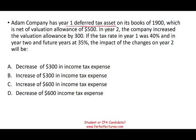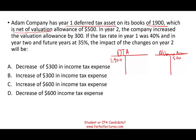Adam Company has a year-one deferred tax asset on its books of $1,900, which is net of a valuation allowance of $500. So in year one: deferred tax asset of $1,900 with a valuation allowance of $500. In year two, the company increased the valuation allowance by $300, bringing it to $800. If the tax rate in year one was 40% and in year two and future years 35%, the impact on year-two income tax expense will be: A) a decrease of $300, B) an increase of $300, C) an increase of $600, or D) a decrease of $600.